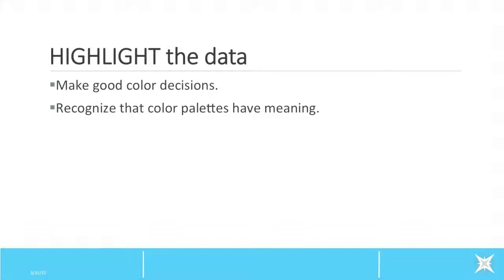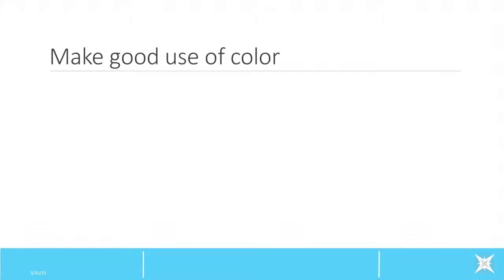These visual properties are called pre-attentive variables because the process of perceiving them is automatic and immediate and does not involve conscious thought. As you design your graph, use this knowledge to intentionally highlight the most critical information. One of the best ways is through the use of color. To make good use of color, here are a few things to consider: Color basics and color meaning.